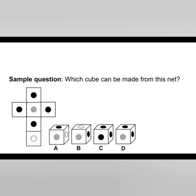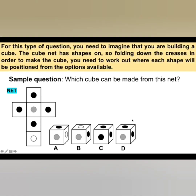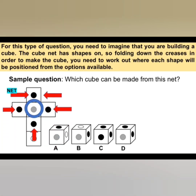The first question is: which cube can be made from the net? That is the net, and we have to decide which one, when it's made up, forms A, B, C, or D. For this type of question, you need to imagine that you are building the cube from the net. You will see on the net that there are four black circles, a grey circle, and a white circle. We have to imagine folding down the creases to make the cube, then work out where each shape will be positioned. My advice is to choose one particular area of the net — in this case, I'm going to choose that grey circle, and then look around it. I can see it's surrounded by black circles.